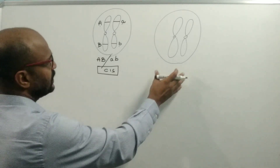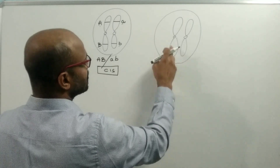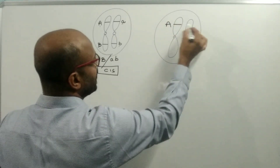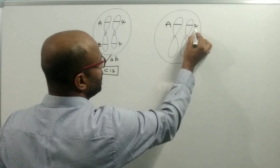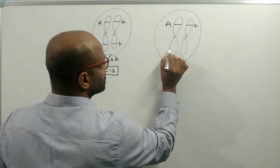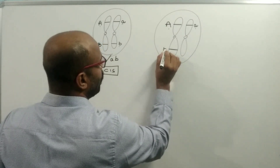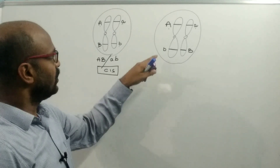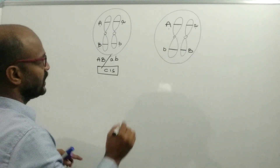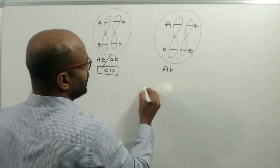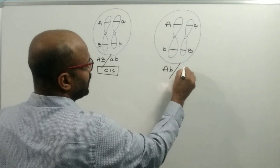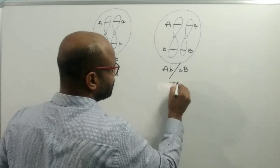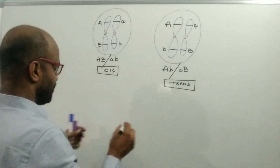Now consider another type of arrangement. Suppose this is another pair of chromosomes. In this pair, one chromosome contains capital A and small b — where small b is the recessive allele of capital B. The other homologous chromosome contains small a and capital B. So in this pair, one chromosome contains capital A and small b, and the other chromosome contains small a and capital B. Such an arrangement is known as the trans arrangement. Trans means cross.